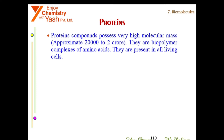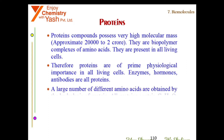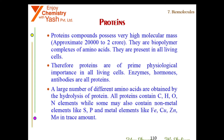Proteins possess very high molecular mass, approximately 20,000 to 2 crores. They are biopolymer complexes of amino acids present in all living cells, and therefore are of prime physiological importance. Enzymes, hormones, and antibodies are all proteins. A large number of different amino acids are obtained by the hydrolysis of protein. All proteins contain carbon, hydrogen, oxygen, and nitrogen elements, while some may also contain non-metals like sulfur and phosphorus, and metal elements like iron, copper, zinc, and manganese in trace amounts.